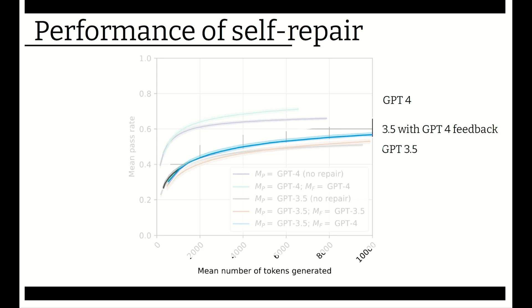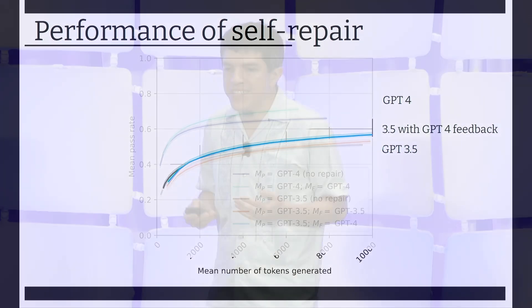One of the things that was surprising is that the bottleneck really seems to be in the ability of the model to recognize what the problem is. And in fact, if we use a more powerful model to recognize what the problem is, then it actually performs better compared to the baseline code.